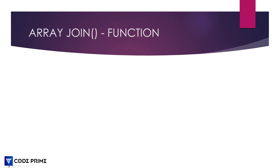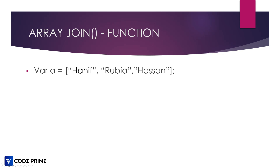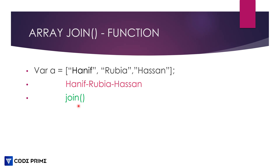Now we are going to learn the array join method — how to use the join function in array methods. This is also used to join elements in an array. We can take an array with some strings and convert all those strings into one combined string, and we can add a separator like a comma, hyphen, or whatever we want. This join function is a very special method in JavaScript. Let's go back to our coding studio.